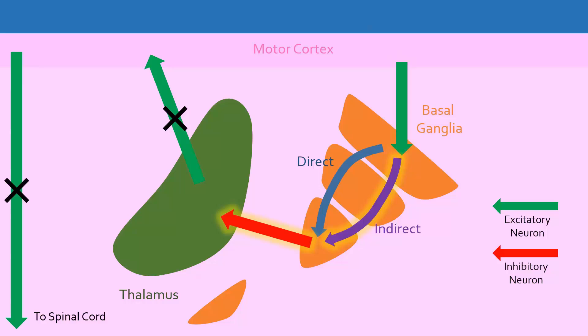In fact, the indirect pathway is constantly activated, allowing you to stay still at rest. When you want to move your body, you want the indirect pathway to stop being activated, and the direct pathway to be activated.